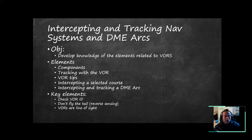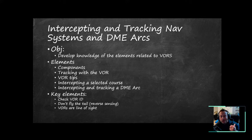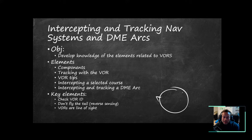Let's talk about intercepting and tracking navigational systems and DME arcs. The objective is to develop knowledge of VORs — very high-frequency omnidirectional range radio systems. A VOR sends out radials in all directions and you pick one and fly either to or from, or use it for navigation. Key elements: always verify the VOR ID. If you don't verify it's active and you're on the right frequency, you could be flying all day and never get to where you're trying to go. Don't fly the tail — select the correct to or from indication. Remember VORs are line of sight.